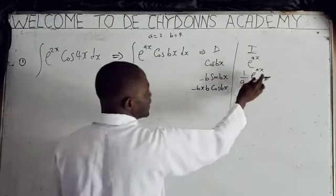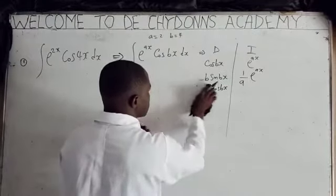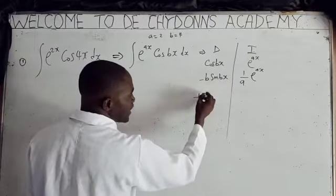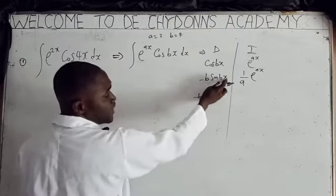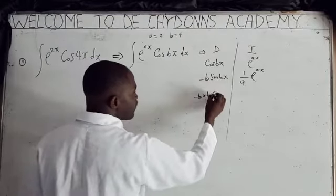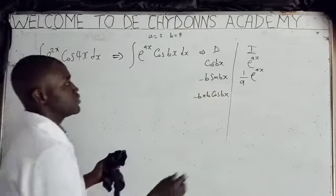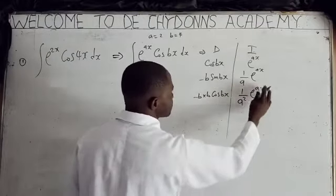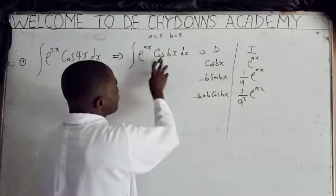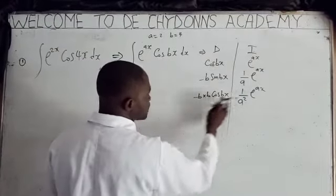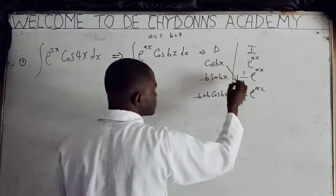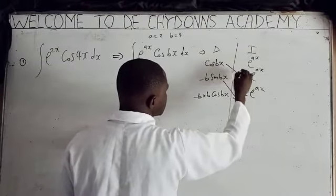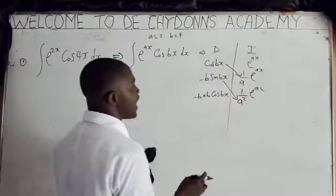Integrating again gives (1/a²)e^(ax). We have now arrived back at cos(bx) on the differentiation side, so we stop here. We assign: this term goes to this, then this goes to this, then this goes to this, and multiply across.